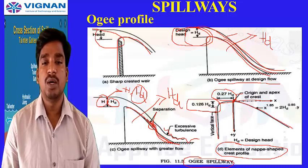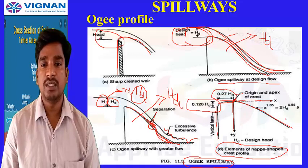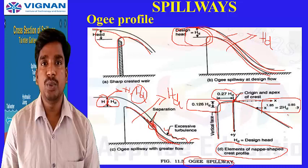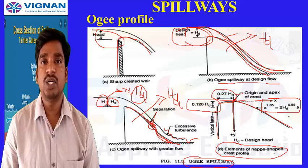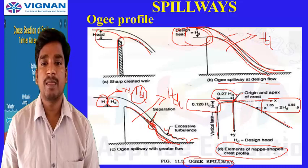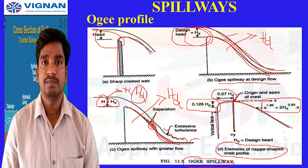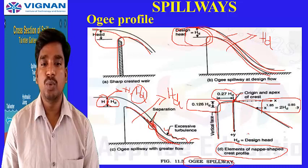The downstream profile of the Ogee spillway follows the equation: x^1.85 = 2 × Hd^0.85 × y, where Hd is the design head of the Ogee profile and x and y are the coordinates from the apex of the crest. Different coordinate combinations are tabulated for design reference. This covers the elements of the nappe-shaped crest profile.